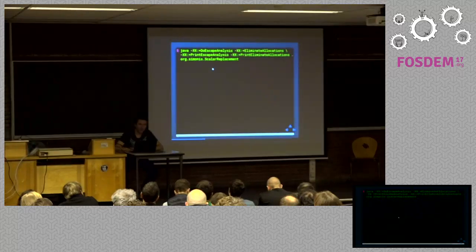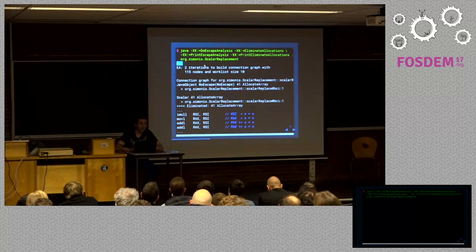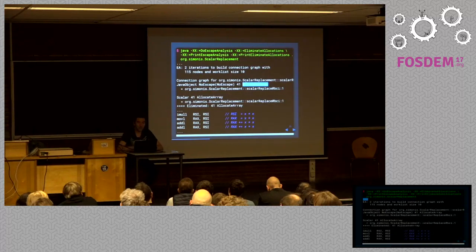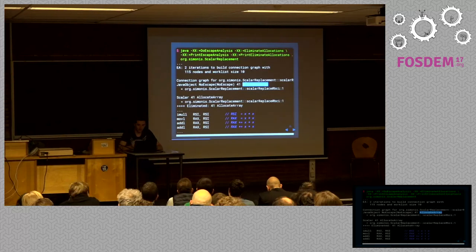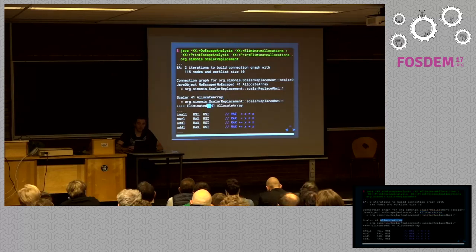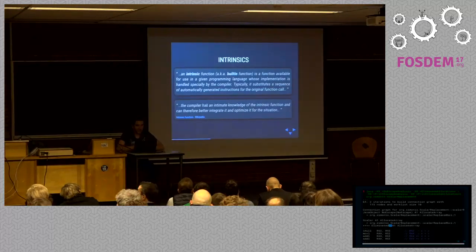If you use a debugging version of Hotspot, you can use the print_escape_analysis and print_eliminate_allocation flags to get more details. When you run that, you get information about the connection graph built by escape analysis. The interesting output shows the compiler detected that the new instruction in your Java code was transformed into an allocate_array node in the JIT compiler graph, the escape analyzer detected it's not escaping the function, determined it can be scalar replaced, and eliminated it. So that's briefly how escape analysis works — now let's come to intrinsics.